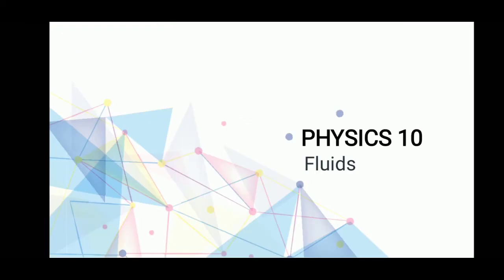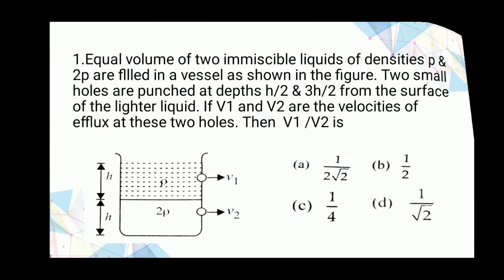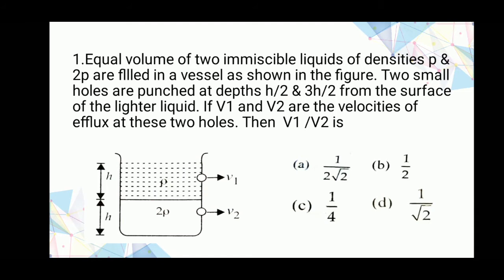First let's see a physics question from the chapter on fluids. Equal volumes of two immiscible liquids of densities rho and 2 rho are filled in a vessel as shown in the figure.